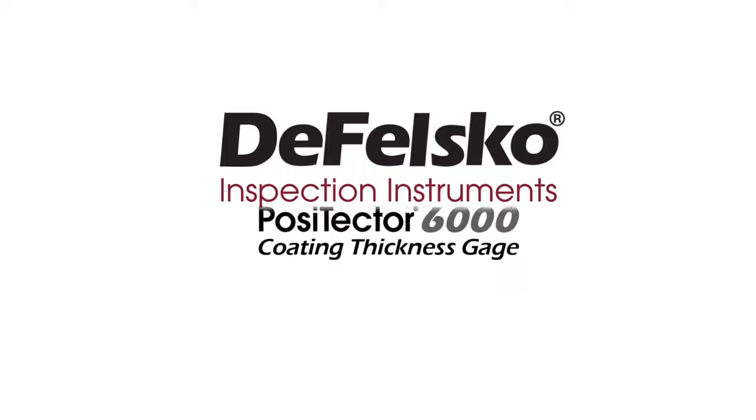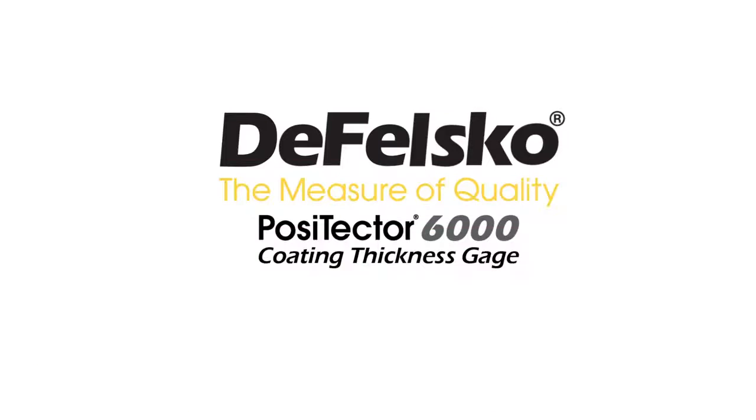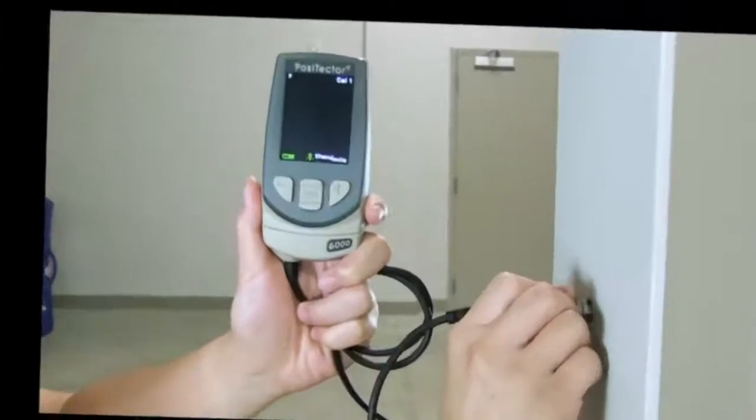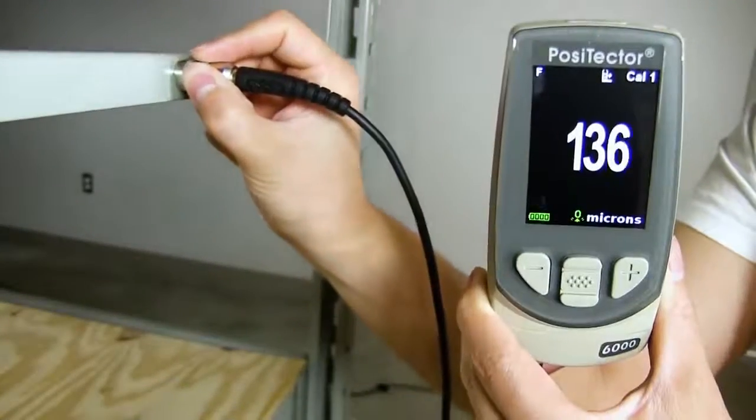Introducing faster Positector 6000 coating thickness measurement speeds and enhanced scanning capabilities from Defelscope. The measure of quality. Today's coating inspectors and applicators are expected to thoroughly evaluate coating thickness over large areas and take many measurements.